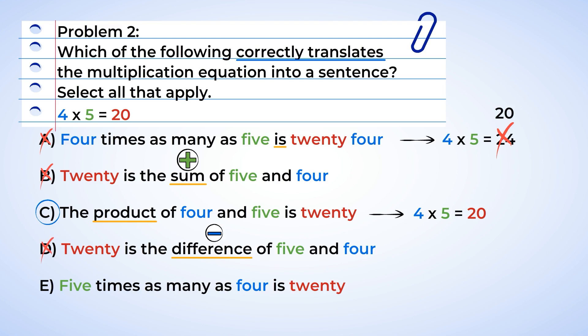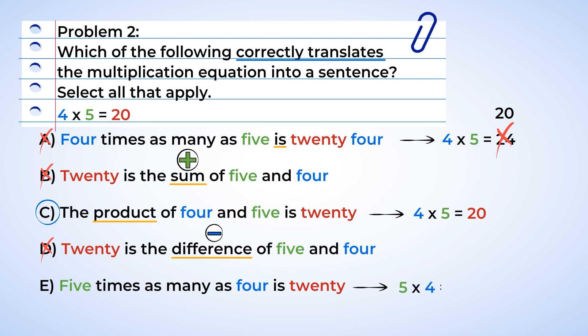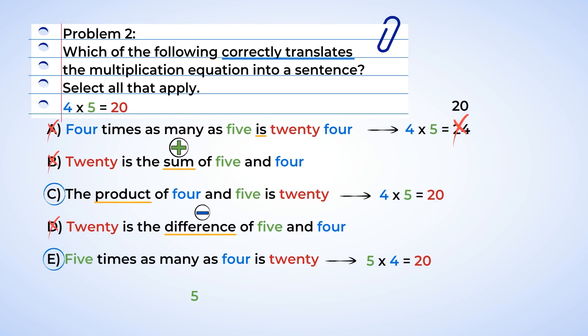Let's look at option E. Five times as many as four can be written as five multiplied by four, and if we replace the is with an equal sign, we get five times four equals 20. This gives us the equation 20 equals five multiplied by four, and yes, that matches. Remember, multiplication is commutative, and that means you can change the order of the numbers being multiplied. Five multiplied by four has the same answer as four multiplied by five. That means options C and E correctly translate the equation into sentences.